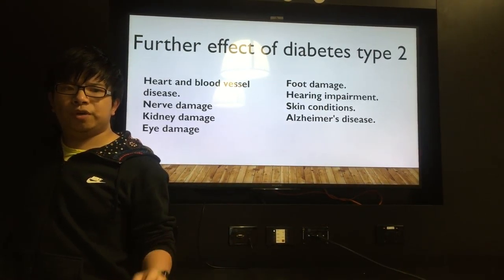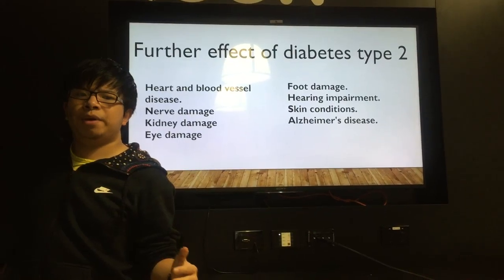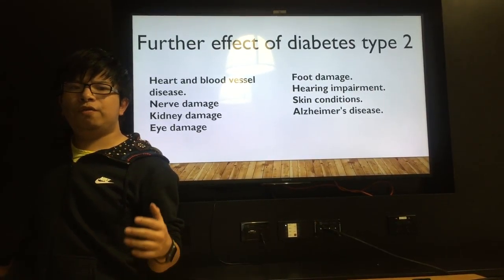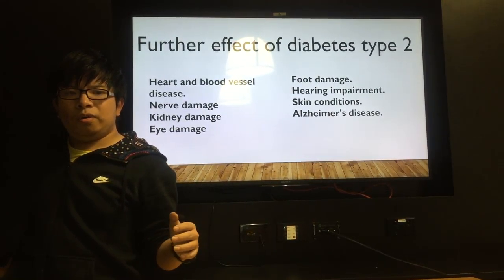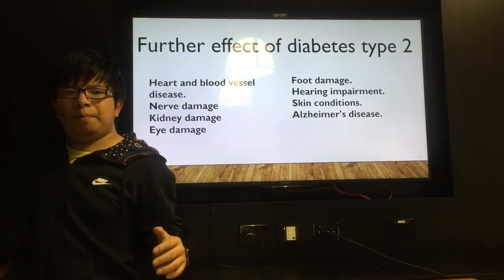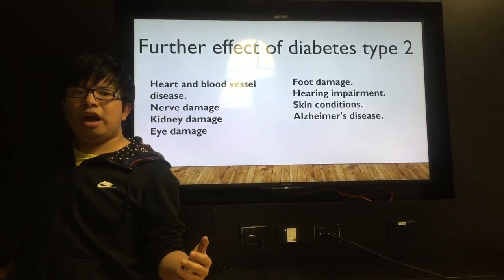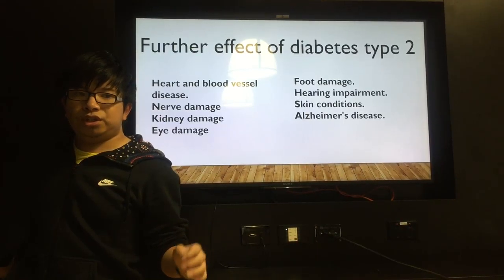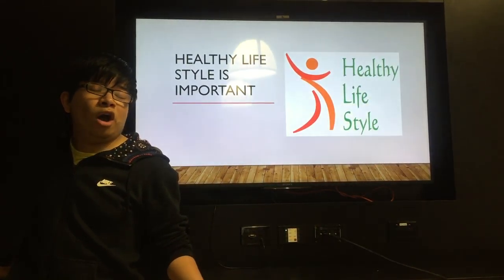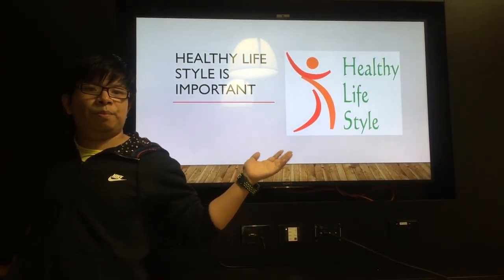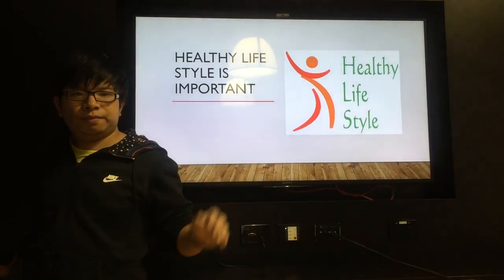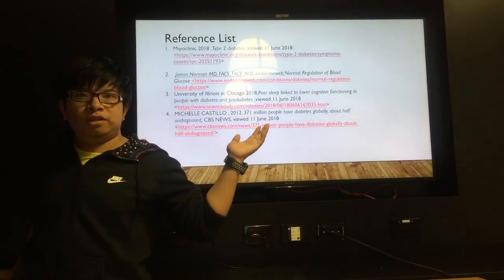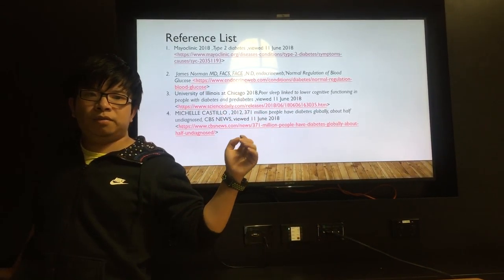For example, heart and blood vessel disease, such as chest pain, heart attack, stroke, narrowing of arteries, and high blood pressure. It also causes nerve damage, kidney damage, eye damage, foot damage, hearing impairment, skin conditions, and Alzheimer's disease.